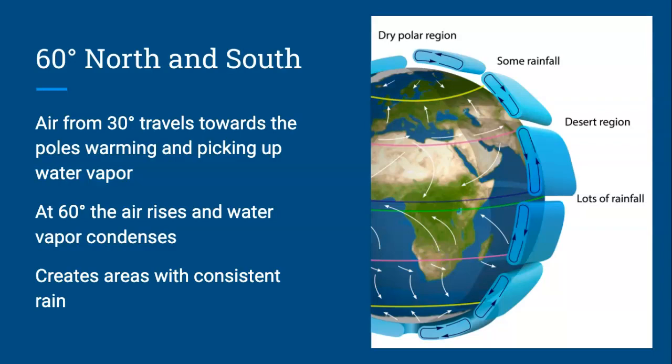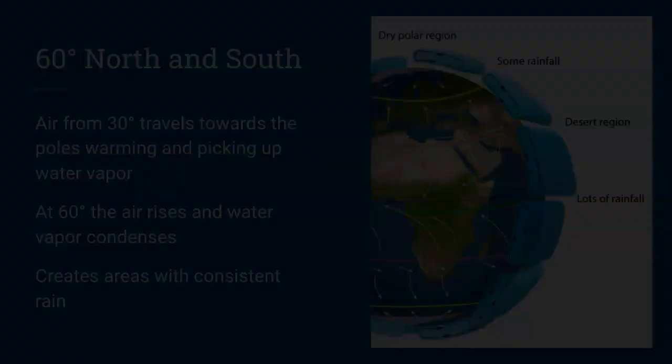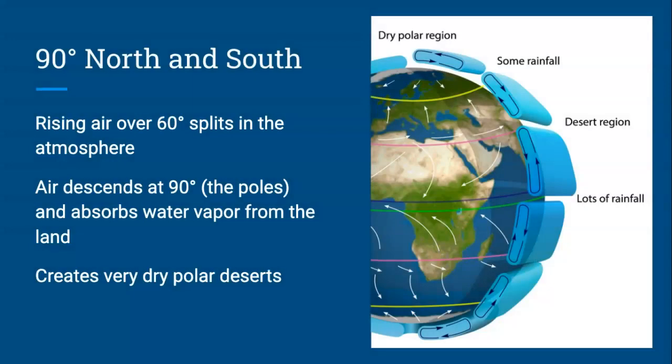But the air has to go somewhere. Again, at 60 degrees north and south, the air hits the top of the atmosphere and splits. Some of that travels back towards 30 degrees, and some of that air travels towards the poles.